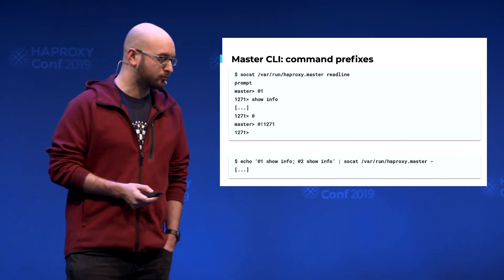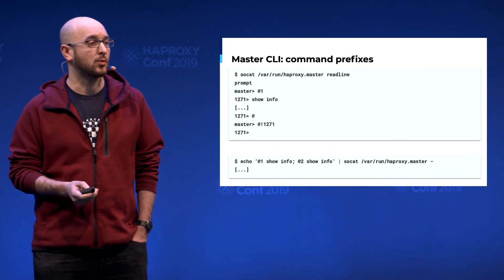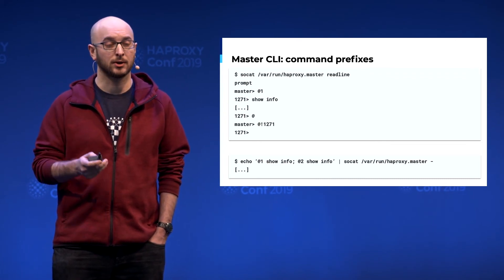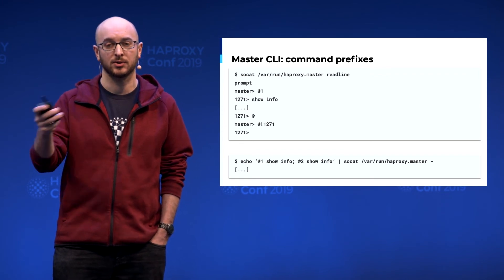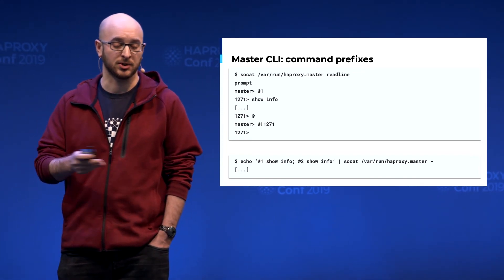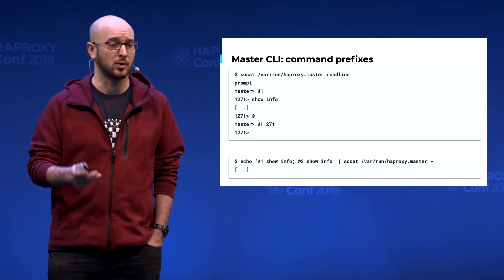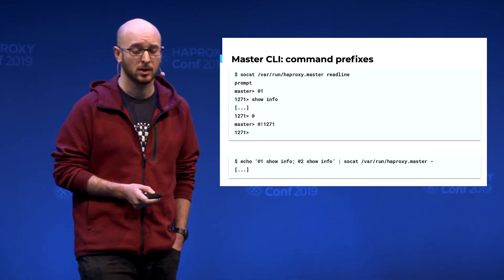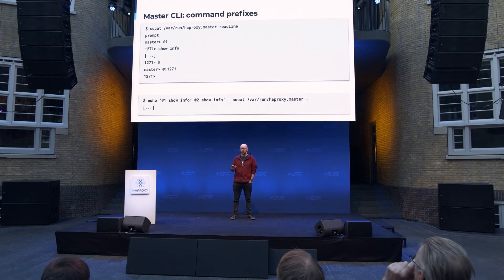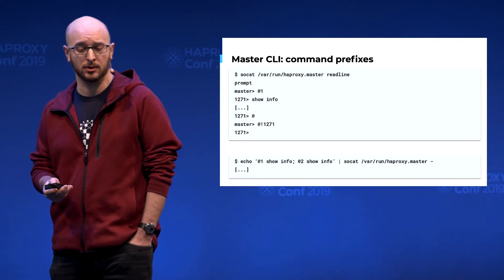To enter a process with the CLI, you need to use the at prefix. For example, you can enter with @1, which will enter the process which has the relative PID 1. There you can type anything as if you were on a normal stats socket. To quit, you just have to type at without anything. And if you want to enter an old process, you can't use the relative PID — you have to use the real PID.